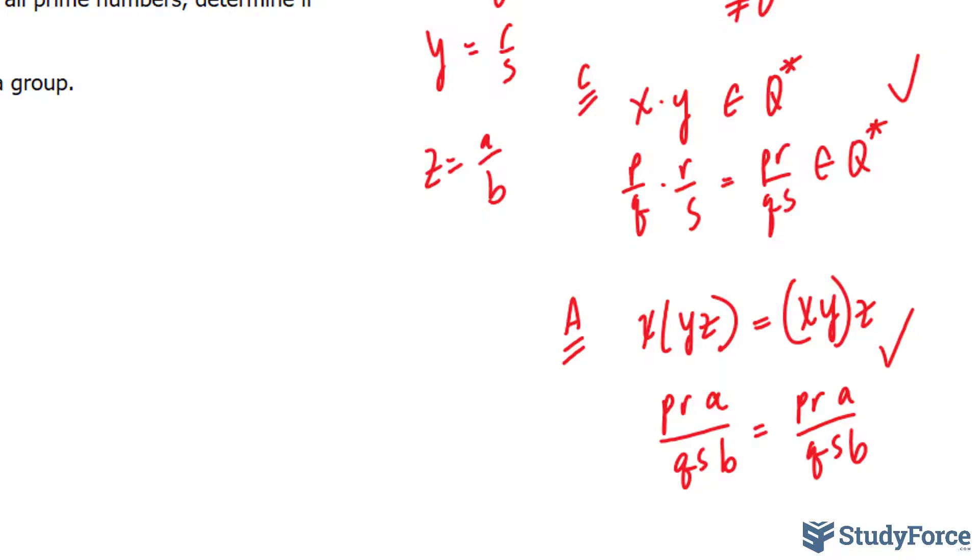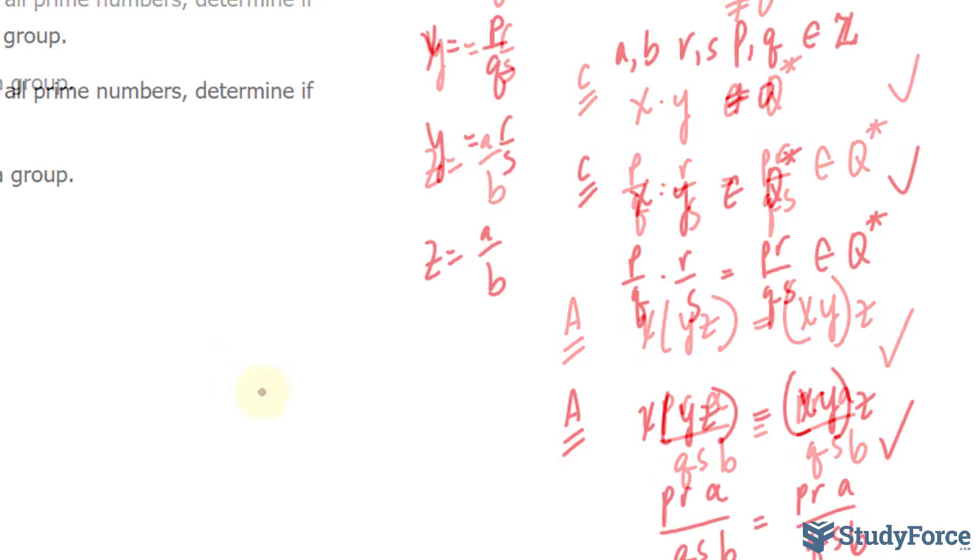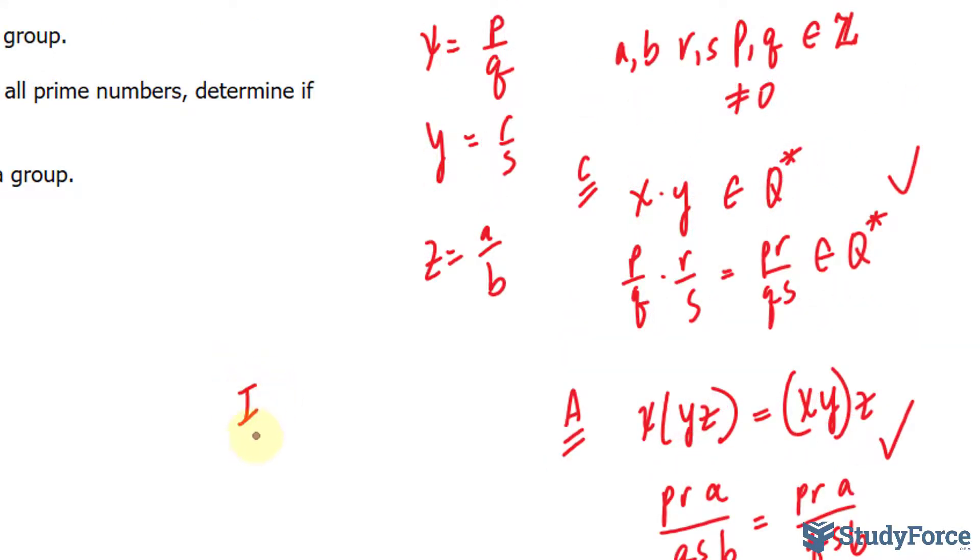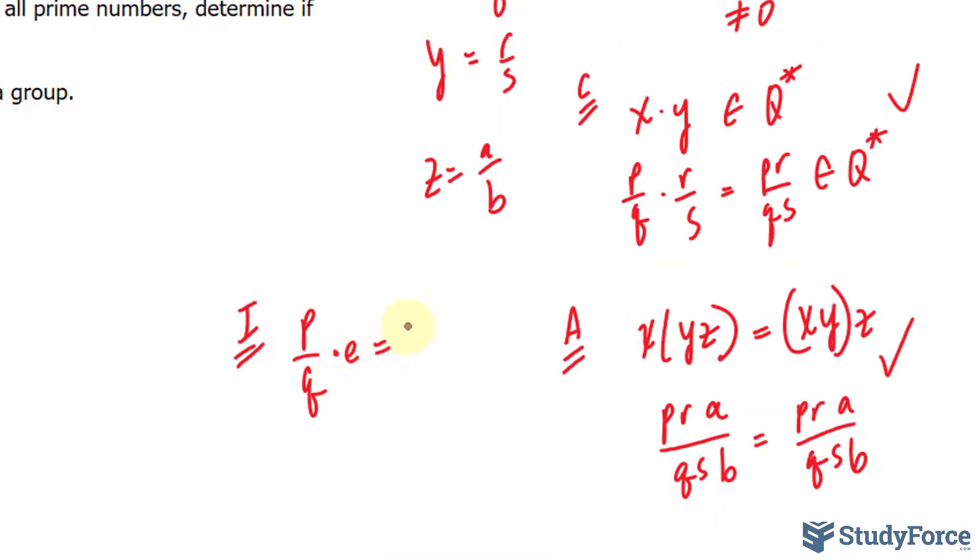Closure passes, and now we'll look at whether an identity exists. If we multiply x, which is p/q, by its inverse, we should get the same as the inverse times p/q, and we get back p/q. Can you think of what e could possibly be? I'm thinking of 1. e must equal 1. 1 is also an element of Q* because it can be represented as 1/1.